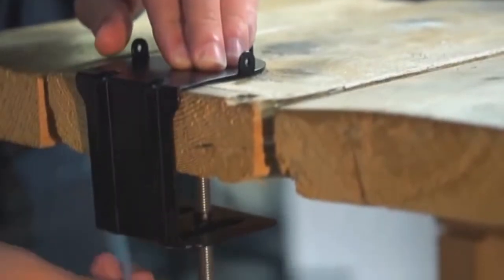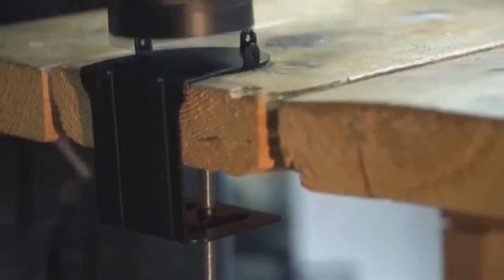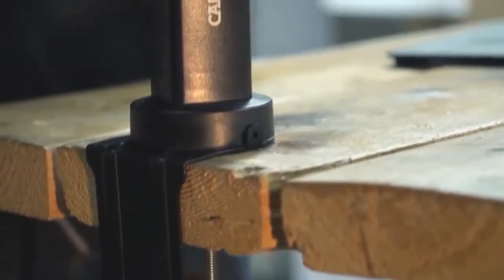The Magnaflex also works great with the included table clamp. This device allows you to place the Magnaflex in workspaces that might not have enough room to fit the entire base plate.